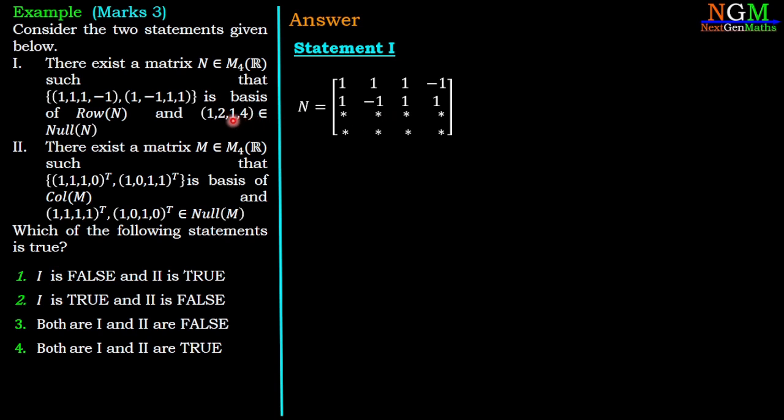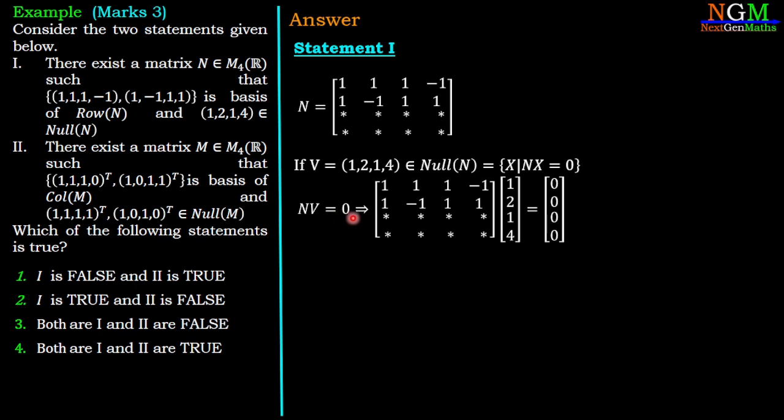We are given that (1,2,1,4) belongs to the null space of N. Suppose V = (1,2,1,4) belongs to the null space of N, which is the solution of NX = 0. If V is an element of the null space of N, then it satisfies NX = 0. Therefore, we have NV = 0.